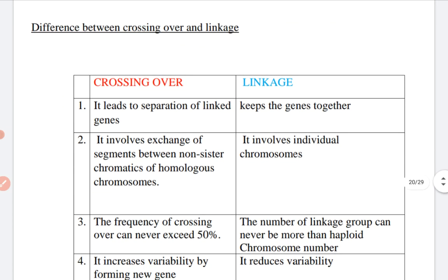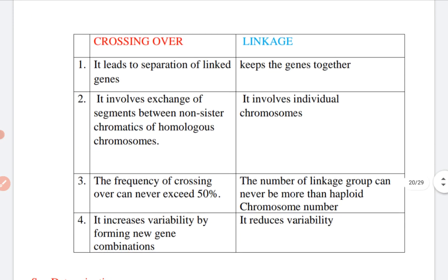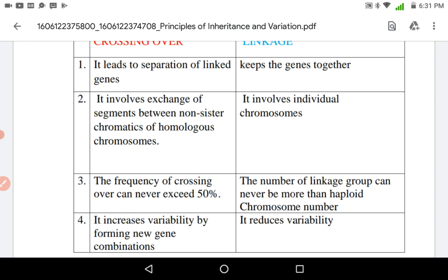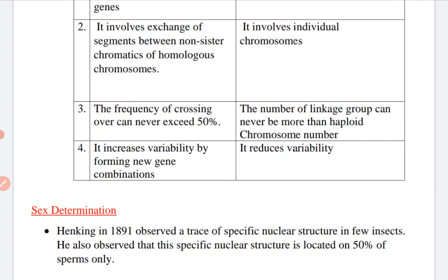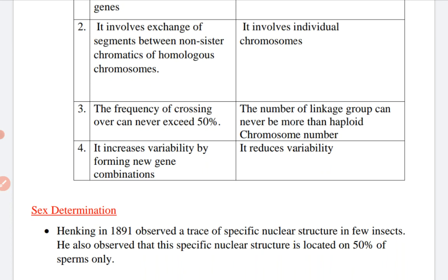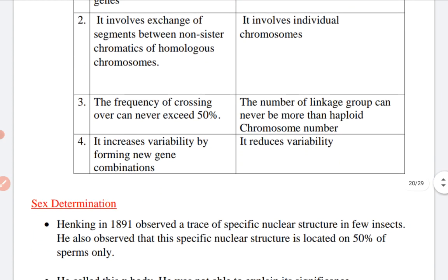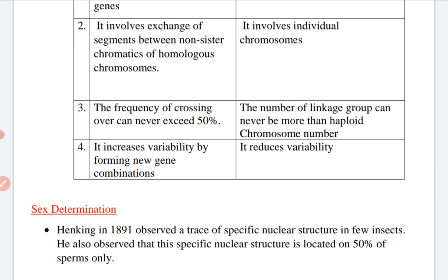Now we should know the differences between crossing over and linkage. First, crossing over leads to separation of linked genes, whereas linkage keeps the genes together. Second, crossing over involves exchange of segments between non-sister chromatids of homologous chromosomes, whereas linkage involves individual chromosomes. Third, the frequency of crossing over can never exceed 50%, but the number of linkage groups can be more than the haploid number of chromosomes. Fourth, crossing over increases variability by forming new gene combinations, whereas linkage reduces variability.